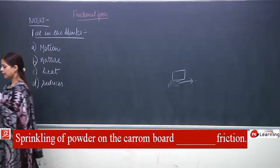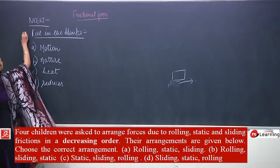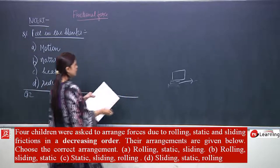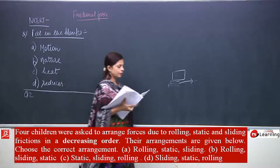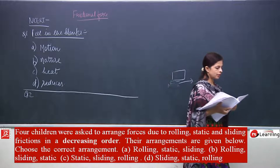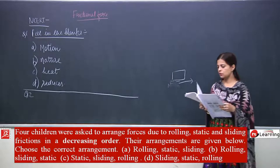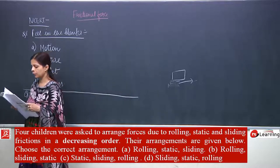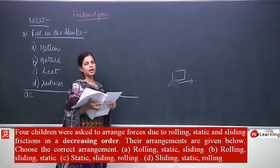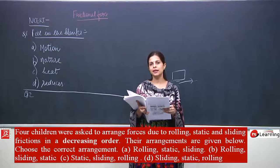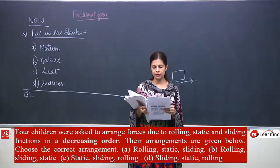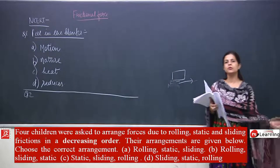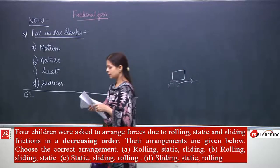Now question number 2: four children were asked to arrange the forces due to rolling, static, and sliding friction in decreasing order. The options given are: A — rolling, static, sliding; B — rolling, sliding, static; C — static, sliding, rolling; D — sliding, static, rolling. We need to find which arrangement is correct.